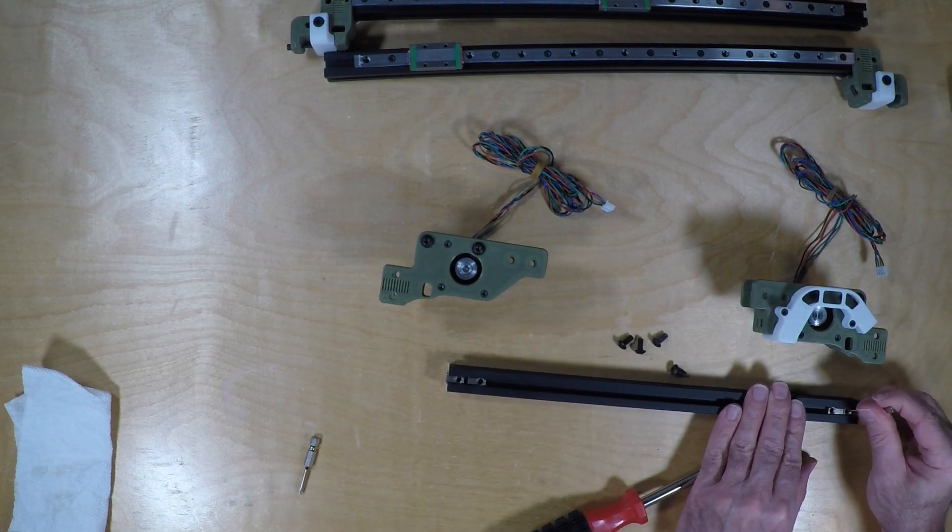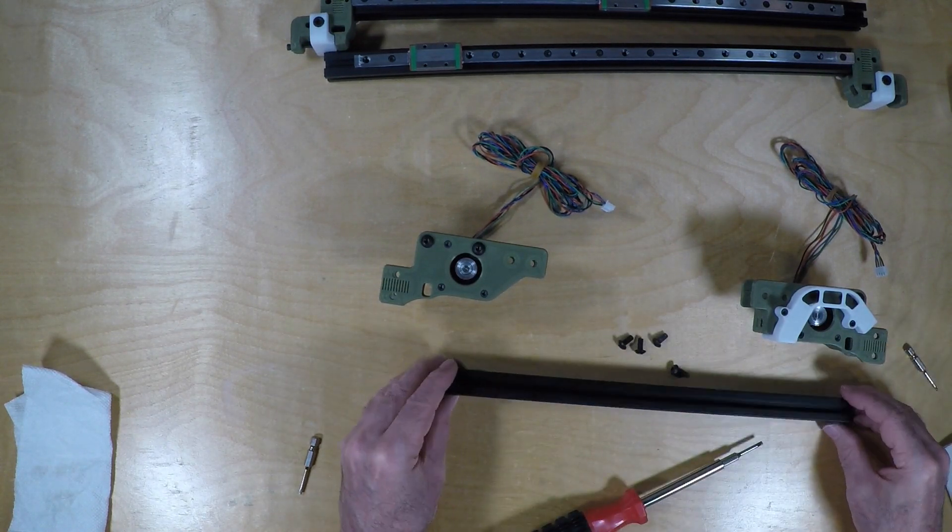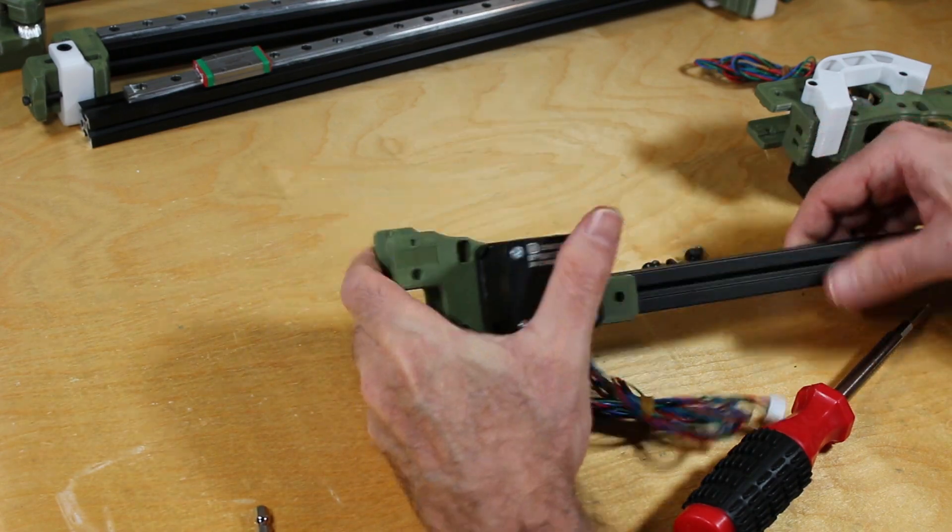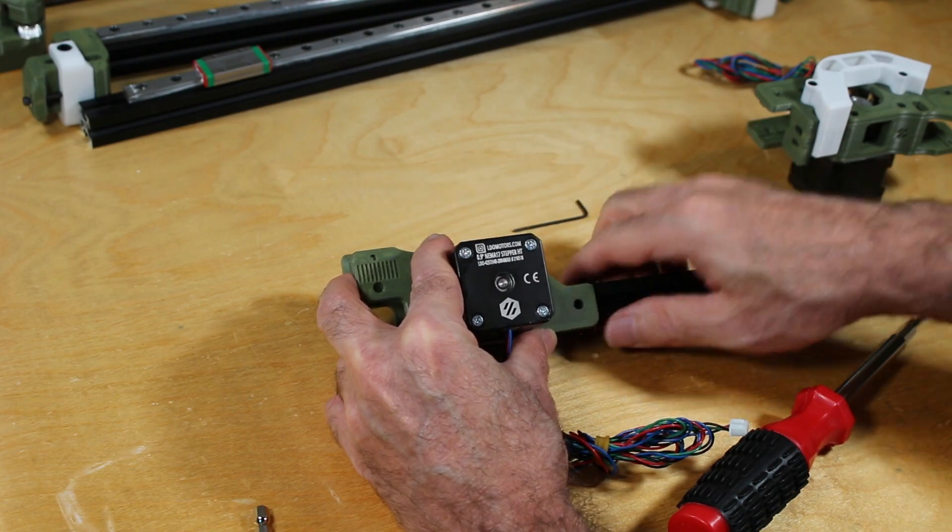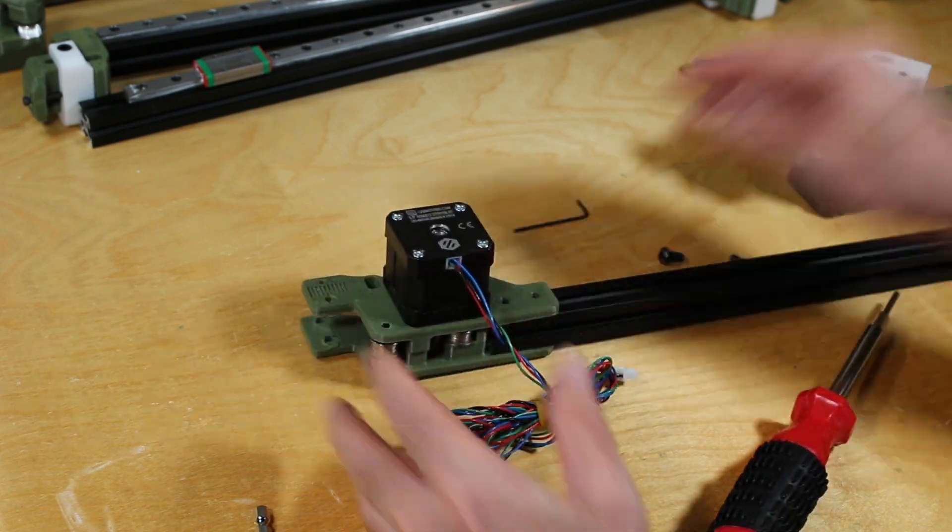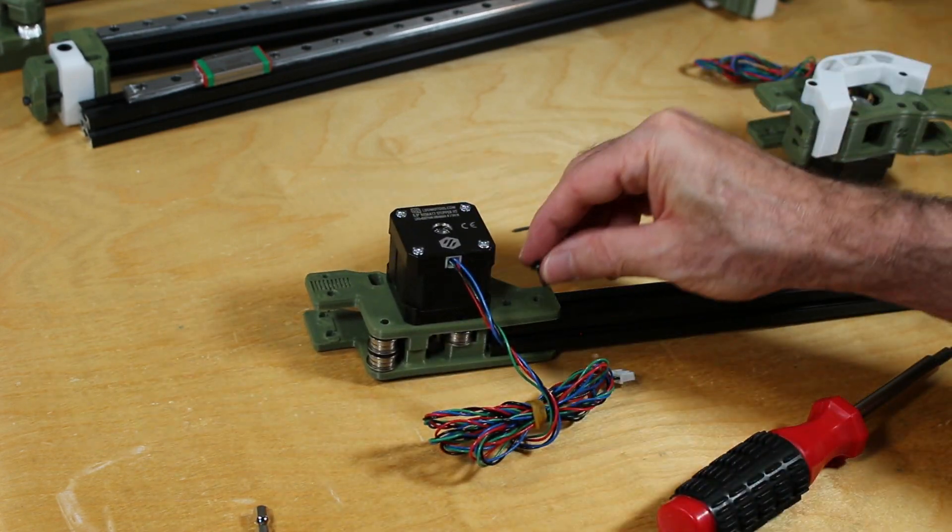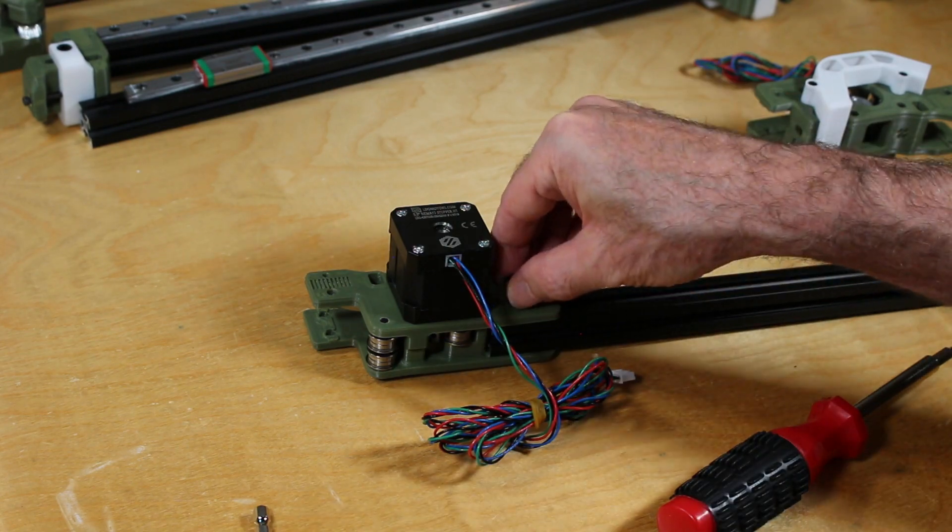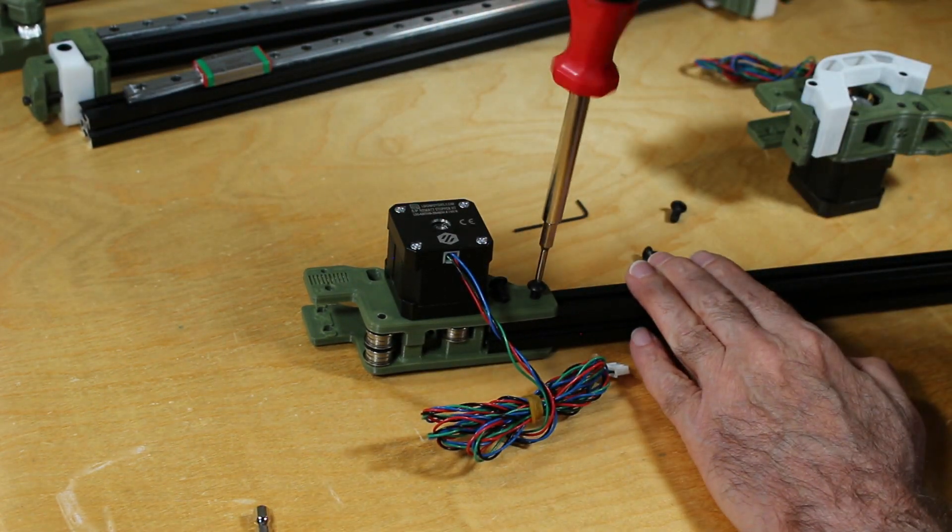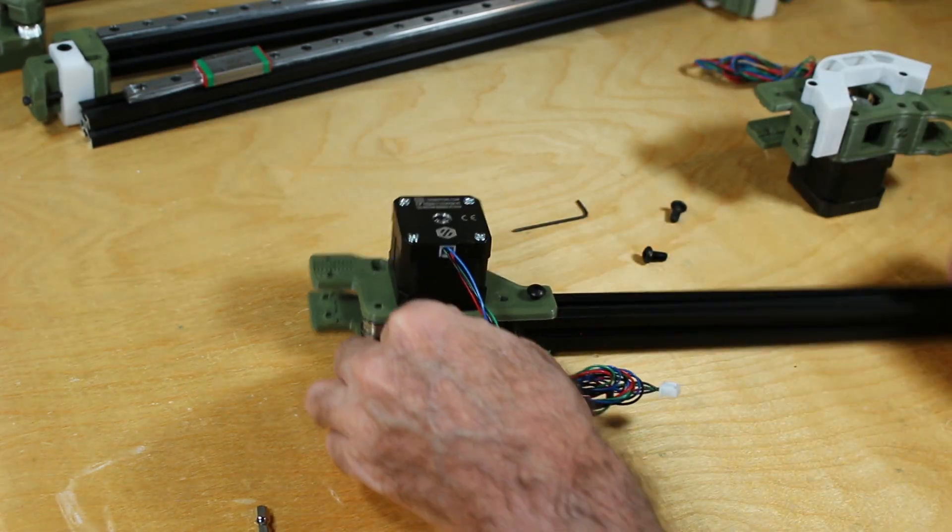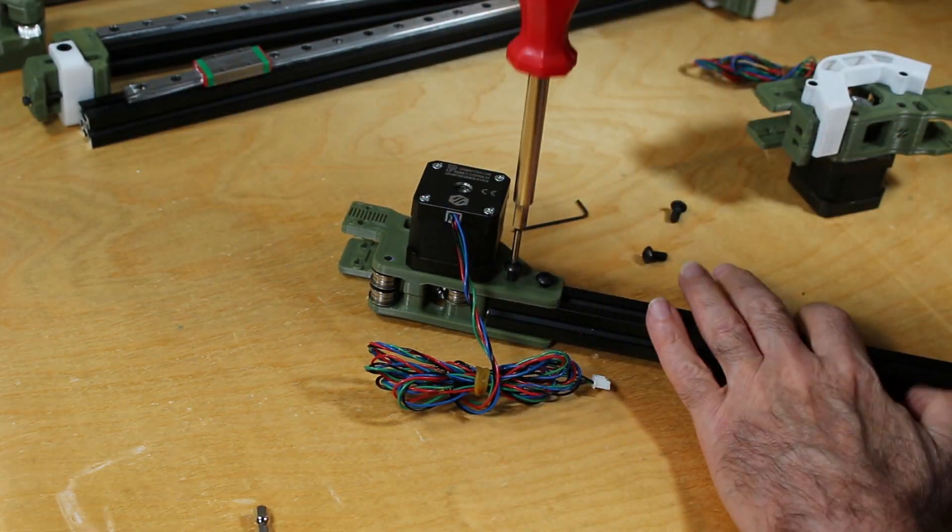And here you can see I have both sides loaded with T-nuts. And then you can go ahead and insert the rail. And simply go ahead and tighten the bolts. And make sure you get both ends and both sides.